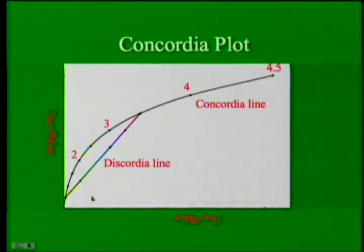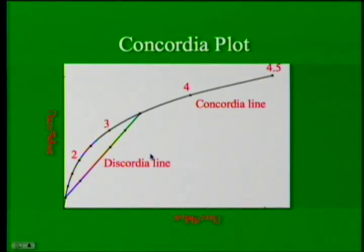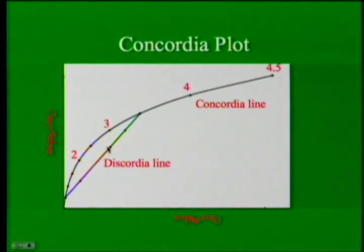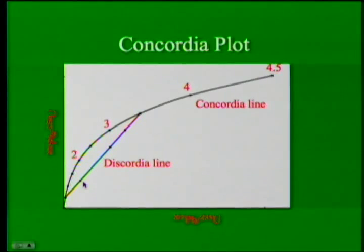This is a Concordia plot. The curve moves outward in a quasi-exponential fashion. Lead-207 divided by uranium-235 is on one axis; lead-206 divided by uranium-238 on the other. What you typically get when you measure samples is a plot with multiple points all lying on the same straight line — and that line is called a Discordia line.